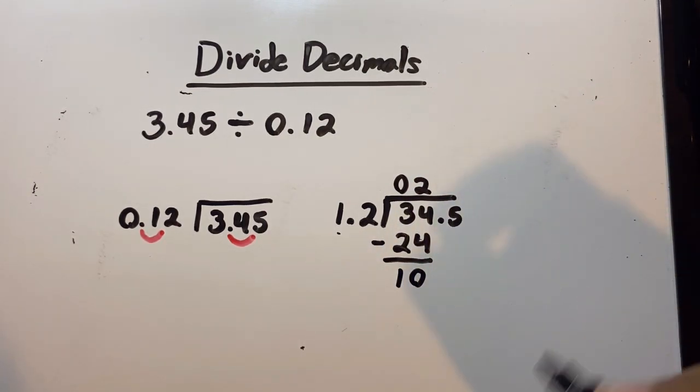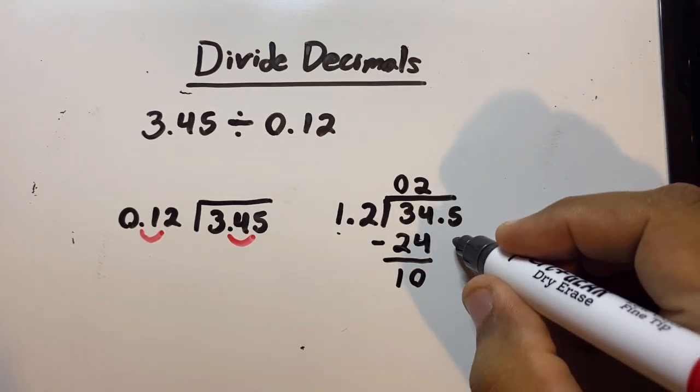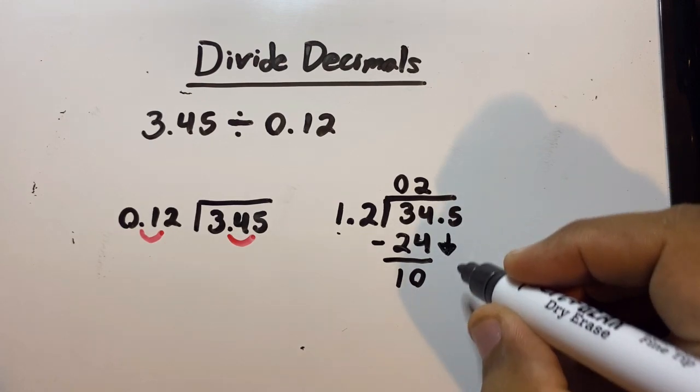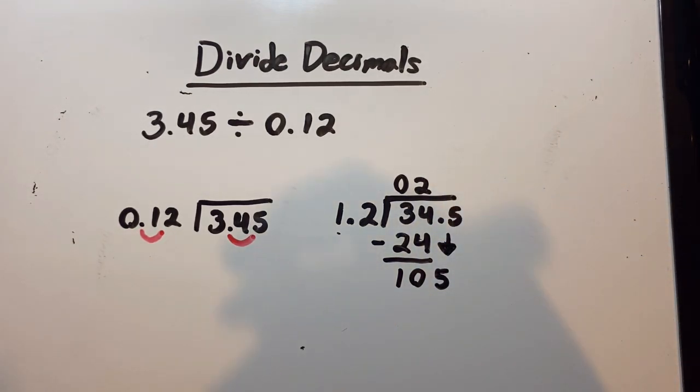What's next? Well, we forgot about this 5. We're gonna drop it down, so now this 10 becomes a 105. Now we need to figure out how many times this 12 goes inside 105.